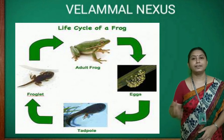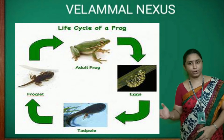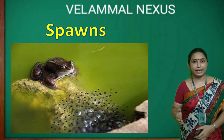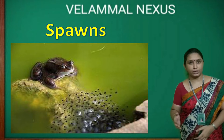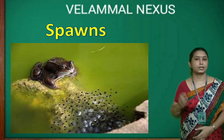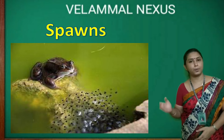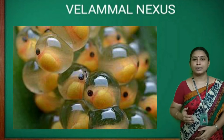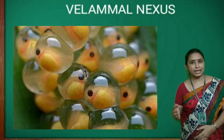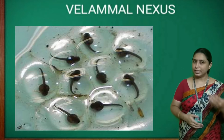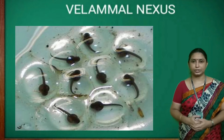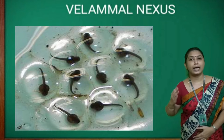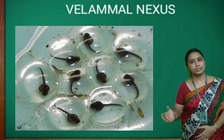Next, let us move on to the life cycle of frog. Frogs reproduce by laying eggs in water in large clusters called spawns. An embryo starts developing inside each egg. In the next stage, the eggs are ready to hatch out into a young one called a tadpole.